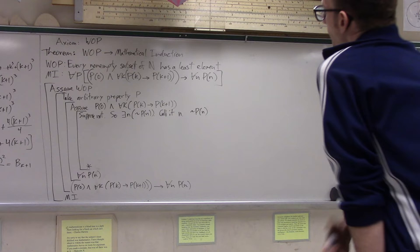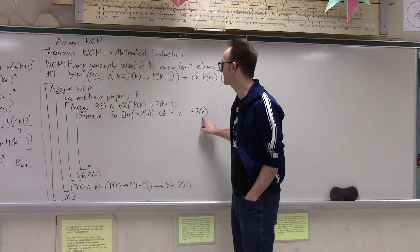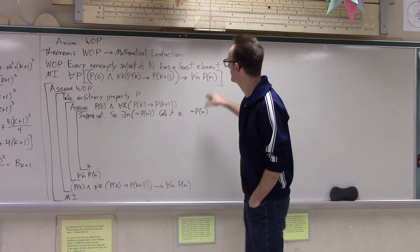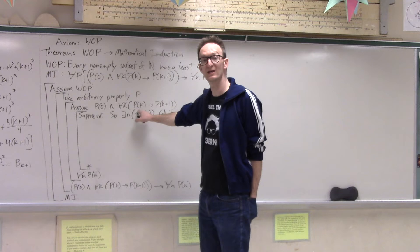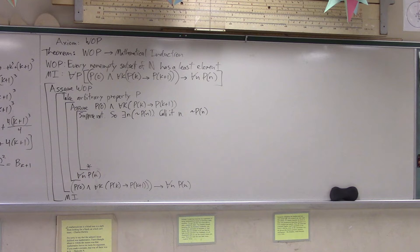Why is that impossible? Well, if you talk it out: there's some number out there, eventually, that doesn't have this property. But the property is always inherited, and 0 has the property. So if 0 has the property, then 1 does, then 2 does, then 3 does, etc. And if you get to some number that doesn't have the property — say 40 doesn't — then since the property is always inherited, it means 39 didn't have it either, then 38 didn't, and so on down to 0. But 0 does have this property.